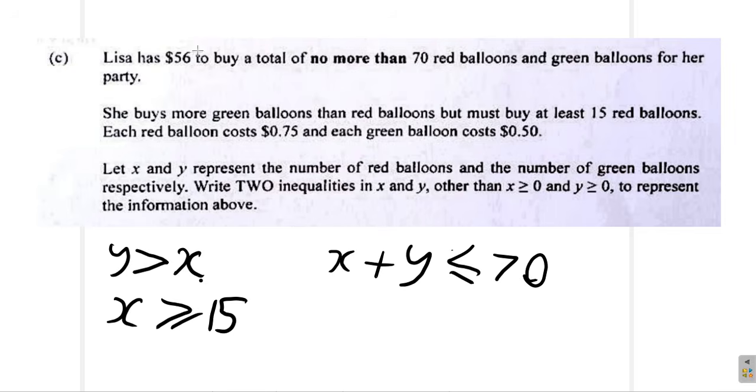Now, the cost of the red balloon is equal to the amount of money for each red balloon multiplied by the number of red balloons, plus the amount of money for each green balloon multiplied by the number of green balloons. It must be less than or equal to 56 dollars. So she has only 56 dollars, so she cannot spend more than that. She can spend the 56 dollars or less, but not more.